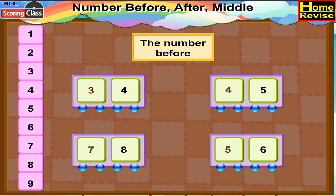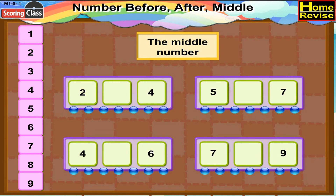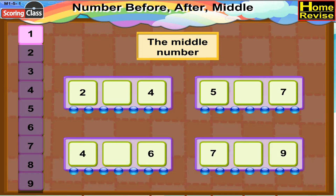Now, children, you have learned the concept of number after and the concept of the number before. Now we will talk about the middle number. Here you will find a train of 3 blocks. In the first block, 2 is written. In the last block, 4 is written. And the middle block is empty. So we have to find the number which comes between number 2 and 4. Let us begin with counting: 1, 2, 3, 4. So the number which comes between 2 and 4 is 3, which means the middle number is 3.